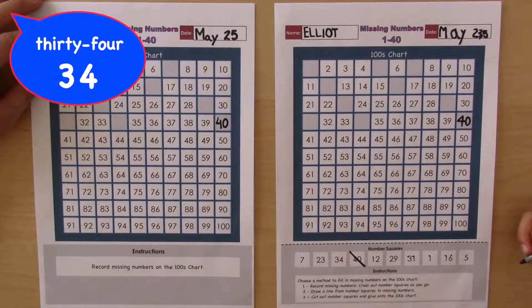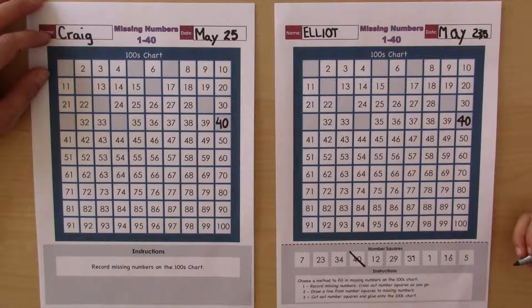Okay, what's the next one? Thirty-four. And how do we say thirty-four in French? Trente.